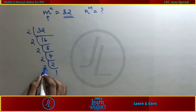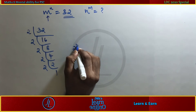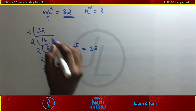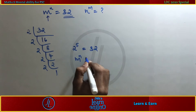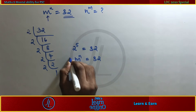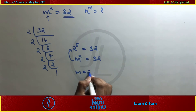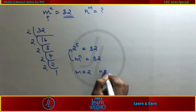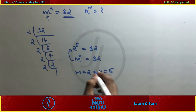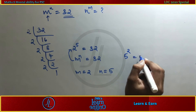So 2 × 2 × 2 × 2 × 2 is 2 raised to 5, and 32 equals m raised to n, where m equals 2 and n equals 5. Now n raised to m equals 5 raised to 2, which equals 25.